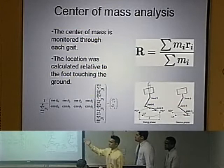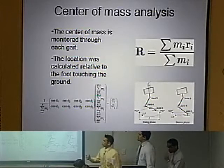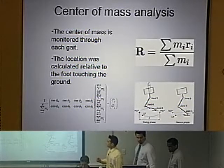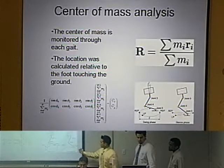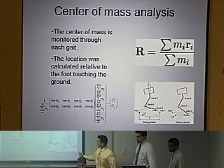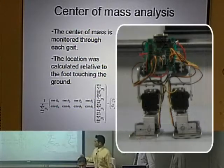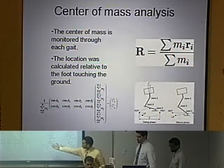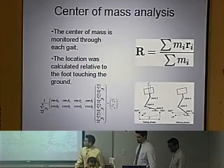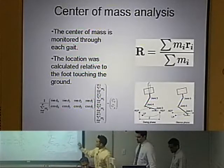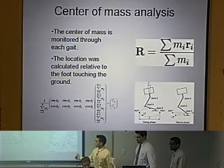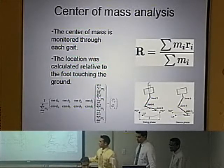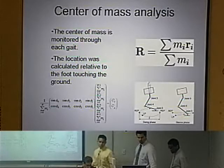Here's the center of mass analysis. We use the equation where the distance to the center of mass equals the summation of all the individual masses times their distances, divided by the summation of all the masses. When the biped is walking, it follows a semi-circular trajectory to reach the next step. This formula gives us the position of each limb in terms of the desired trajectory. Some positions were input in order to obtain the remaining positions.